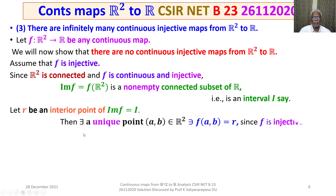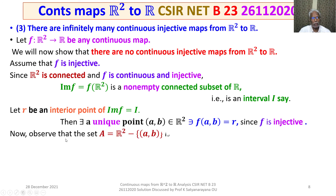Then there exists a unique point (A, B) in R square such that F(A, B) = R₀, uniqueness following from injectivity. Now observe that the set A = R square minus {(A, B)} is connected in R square — this is a known topological fact.